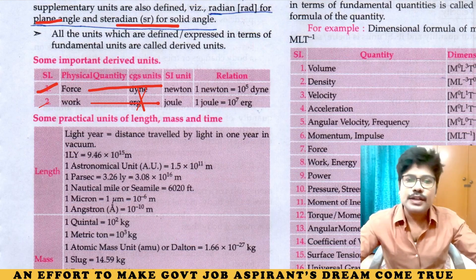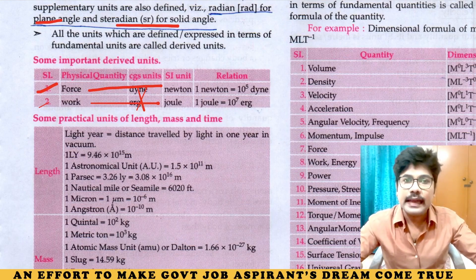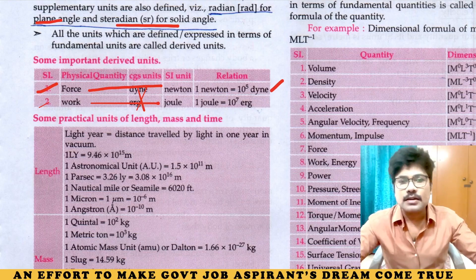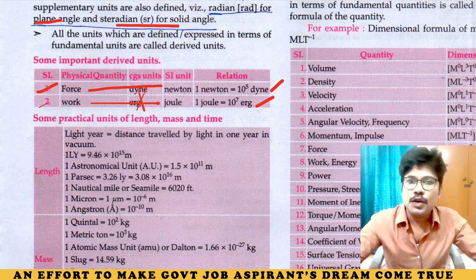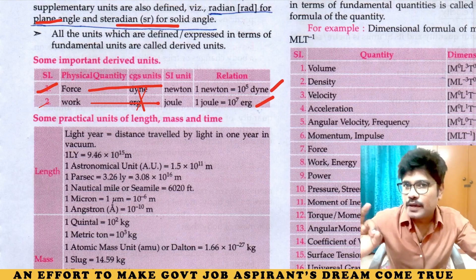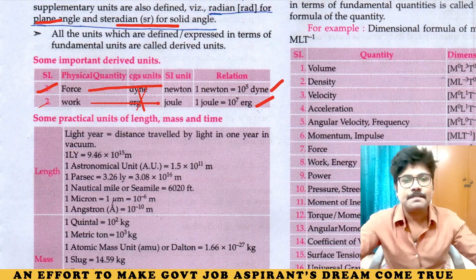For SSC this is important, not for UPSC. Force: Newton (N). 1 dyne equals 10 to the power of 5 Newtons. Work: 1 Joule equals 10 to the power of 7 ergs.